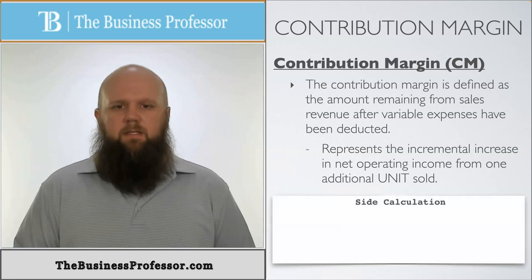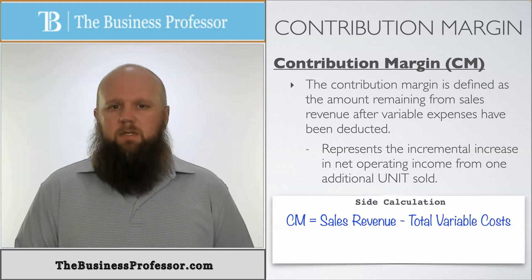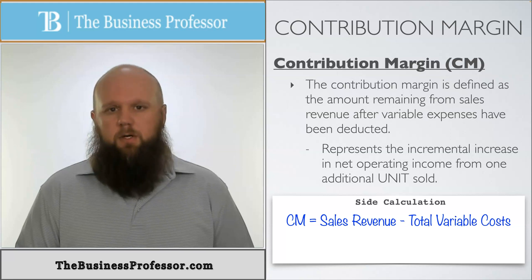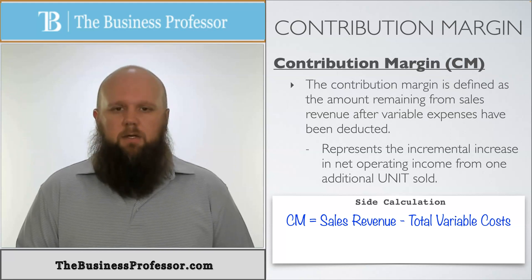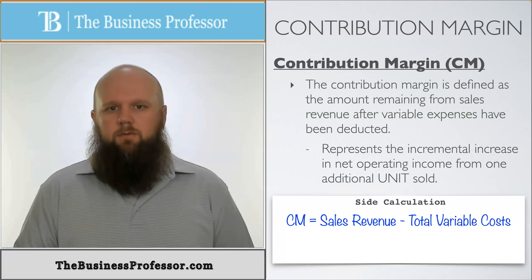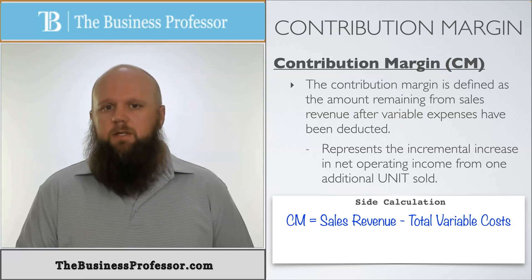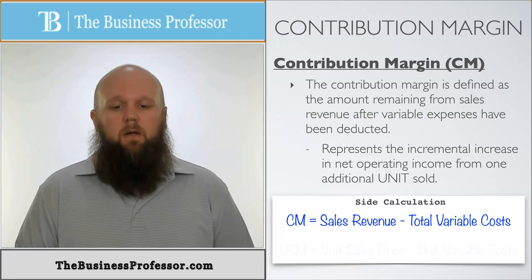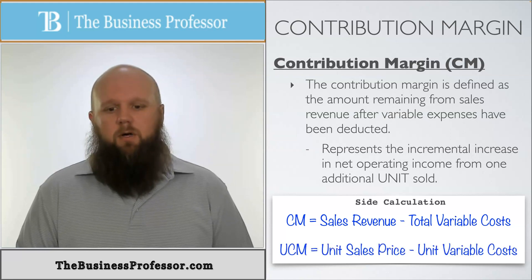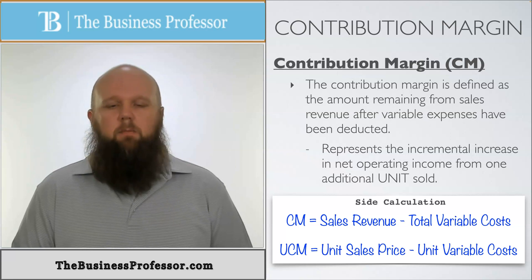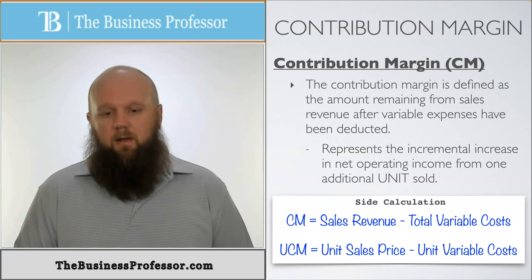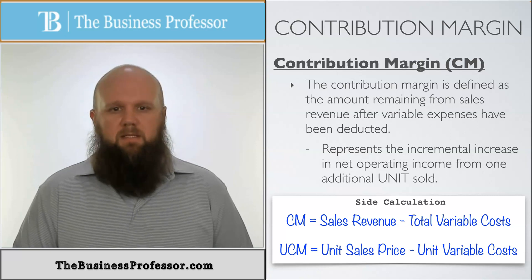There are two equations for contribution margin. From a total perspective: total contribution margin (CM) equals total sales revenue minus total variable cost. Alternatively, in per-unit format: unit contribution margin equals unit sales price minus unit variable cost. These give two different types of contribution margin, but they mean the same thing.